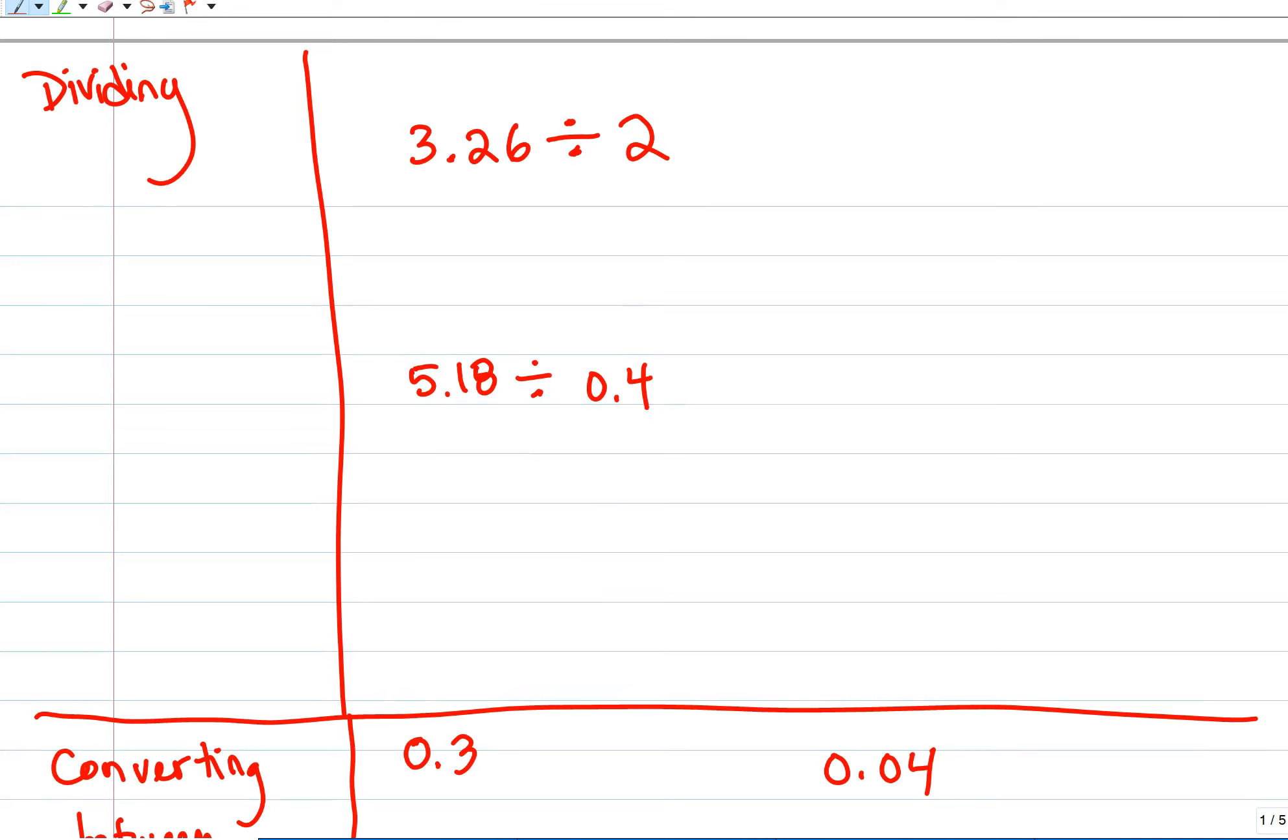Dividing. How do we divide? Well, we divide like normal. 3.26 divided by 2. 2 into 3, bring down, 2 into 12, multiply and bring down, 2 into 6. And then what ends up happening is our decimal from our question here gets brought up to 1.63.